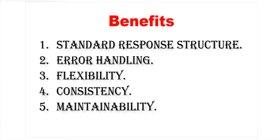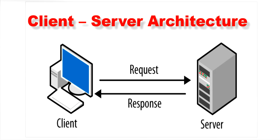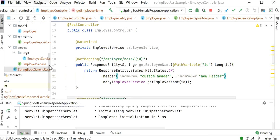Let's create our generic response object and learn the benefit of creating it for our REST APIs. A generic response is a term used to express a general response class. This type of class provides a generalized structure to cover different types of data that the API can return. We can return various responses to the client — such as success information, error messages, data, and other relevant information — through the same format for all APIs. This structure standardizes fields such as error code, messages, and return data for consistent responses from different endpoints.